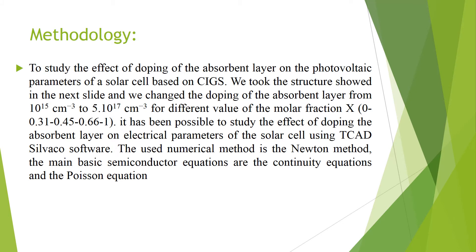To study the effect of doping of the absorber layer on the photovoltaic parameters of a CIGS-based solar cell, we took the structure shown in the next slide and changed the doping of the absorber layer from 10^15 to 5×10^17, for different values of the molar fraction. It has been possible to study these effects using TCAD-Silvaco software. The numerical method used is Newton's method, and the main basic semiconductor equations are the continuity equation and Poisson's equation.